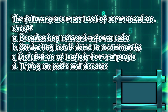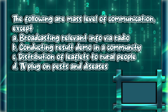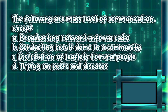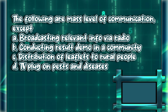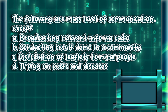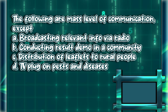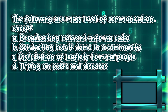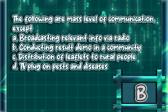The following are mass level of communication, except: A. Broadcasting relevant info via radio. B. Conducting result demo in a community. C. Distribution of leaflets to rural people. D. TV plug on pests and diseases. The answer is letter B.